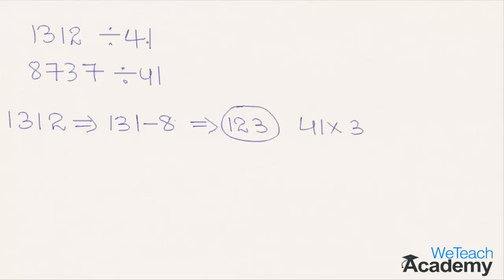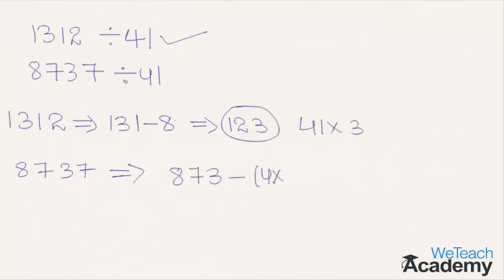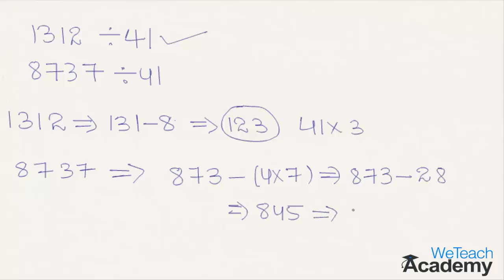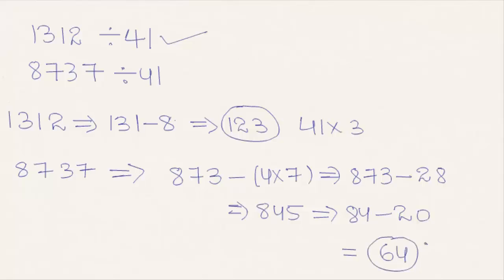Coming to the next number: 8737. Subtracting 4 times the last digit from the remaining number gives us 873 minus 4 times 7, which is 873 minus 28, equal to 845. Repeating the concept: 84 minus 4 times 5 gives us 84 minus 20, which equals 64. Since 64 is not divisible by 41, the number 8737 is not divisible by 41.